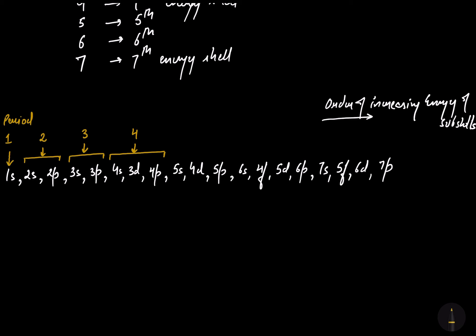Now it's 5s — the principal quantum number is 5 — then 4d, then 5p. The filling of 4d becomes energetically favorable after 5s because the energy of 4d is greater than that of 5s. So in the sequence of energy, 5s, 4d, and 5p constitute period number 5. Now from 6s, the filling of 6s, then 4f, then 5d, then 6p will take place. The filling of 4f becomes energetically favorable after 6s, and the filling of 5d becomes energetically favorable after 4f. So 4f and 5d come in period number 6.